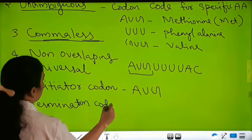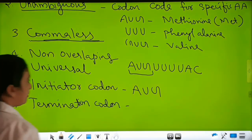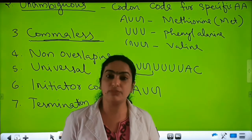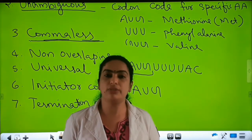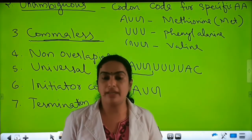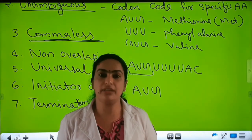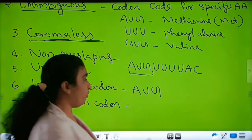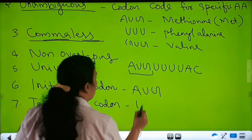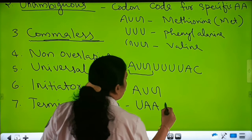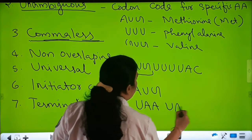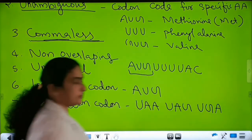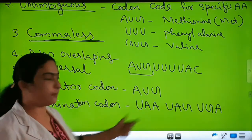The seventh feature is the termination codon. As mentioned, out of 64 codons only 61 code for amino acids. The remaining three are stop codons or nonsense codons: UAA, UAG, and UGA. These are the stop codons.